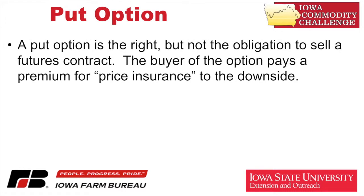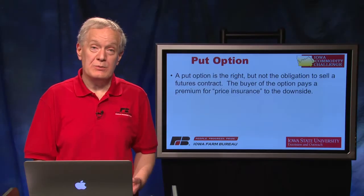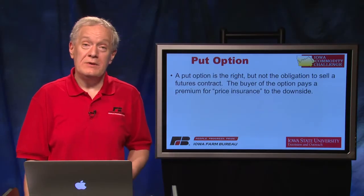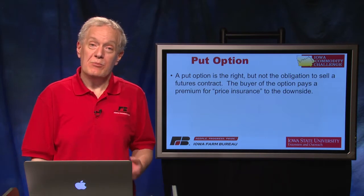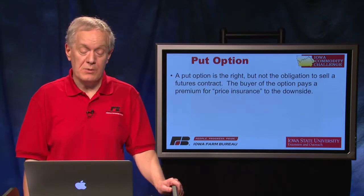Let me define a put option first of all. A put option is the right but not the obligation to sell a futures contract. The futures contract is the underlying commodity in this case. It's important that it's not an obligation — the buyer of the option pays a premium for price insurance to the downside. This applies to someone storing cash bushels, or even if you've got a growing crop you can use a put option to protect against price risk.